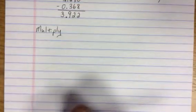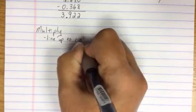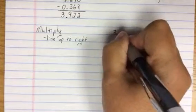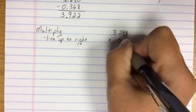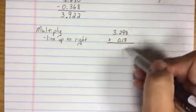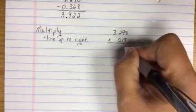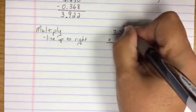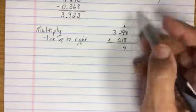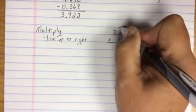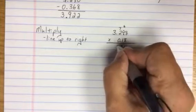We do line up off of the right. We line up to the right, not by the decimal. So 8 times 8 gives me 64. I write the 4, I carry the 6. 8 times 9 gives me 72. 72 plus 6 gives me 78. I write the 8, I carry the 7. 8 times 2 is 16. Plus 7 is 23. I write the 3.